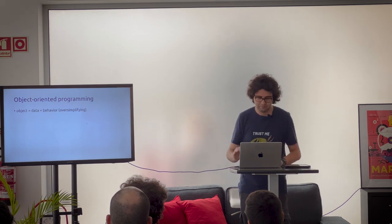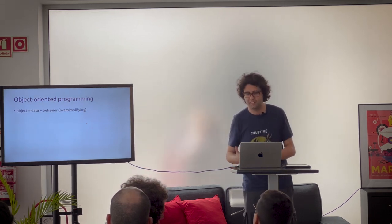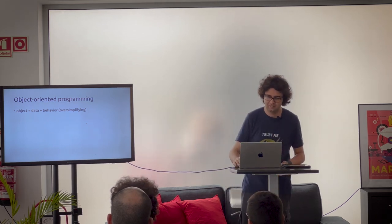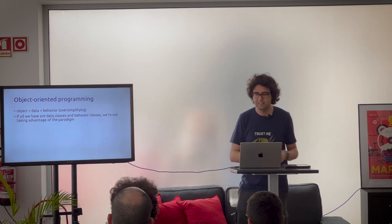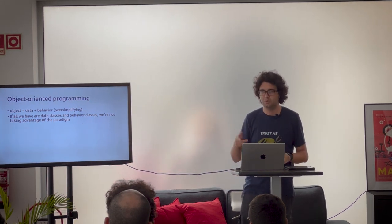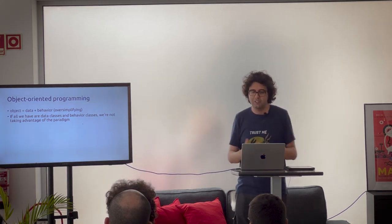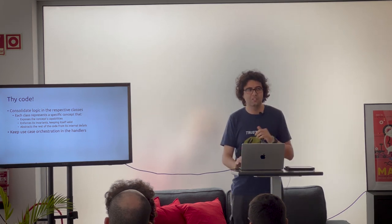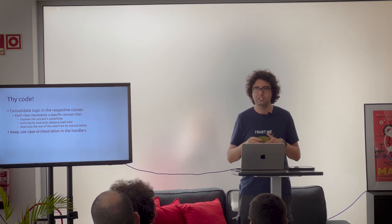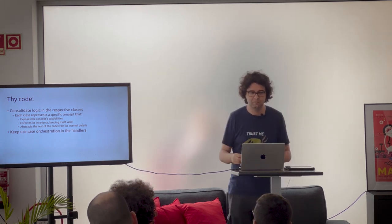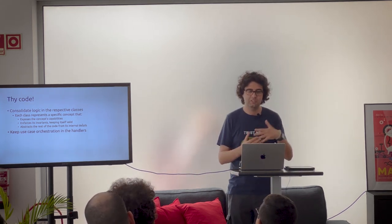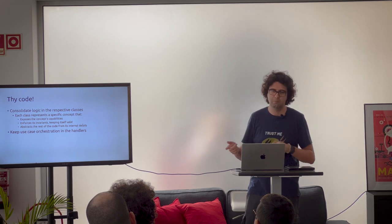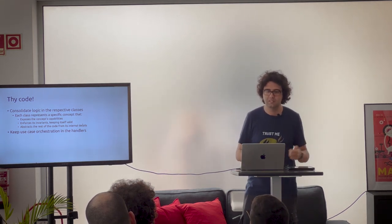Coming back to the root of object-oriented: an object is supposed to be data and behavior together. If all we have is data classes — those DTOs — and behavior classes — those services or handlers — we're not really taking advantage of the paradigm. We're doing basically procedural programming in an object-oriented language. So let's look at the code again and consolidate the logic from the handlers into classes where it makes sense. Each class represents a concept, exposes those capabilities, and forces invariants so the class remains valid without depending on other classes.